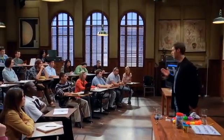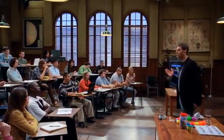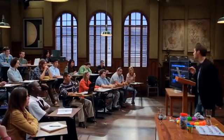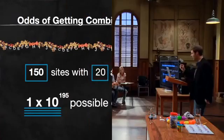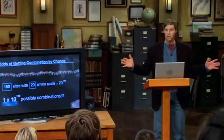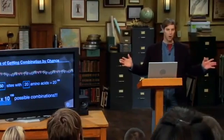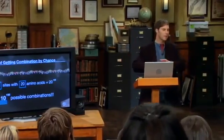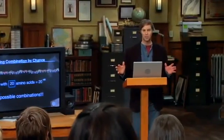Let's take a protein of 150 amino acids in length — that's a very modest, not real big one. We've got 150 sites with 20 possibilities at each site: 20 to the 150th power. Convert that to base 10 — that's 10 to the 195th power. We can't even begin to grasp how many combinations that is.